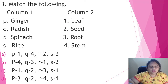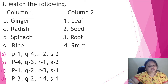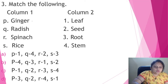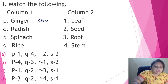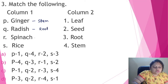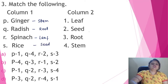Match the following. Column 1: ginger, radish, spinach, rice. Column 2: leaf, seed, root, stem. We know that ginger is a modified stem, radish is a modified root, spinach is a leaf, and rice is a seed.